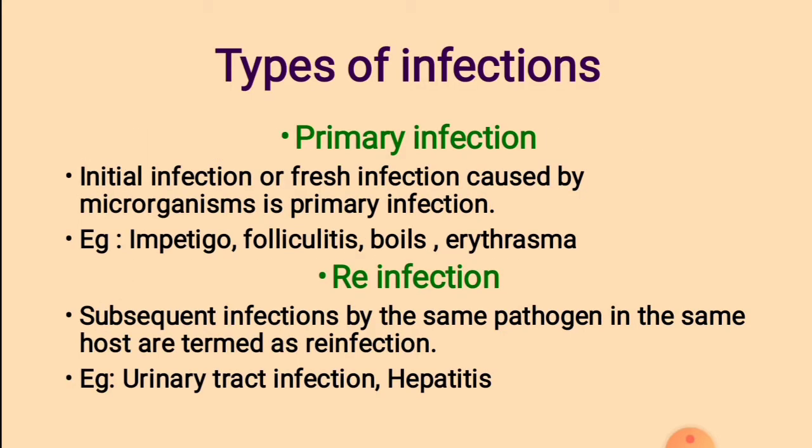What are the different types of infections? 1. Primary infection: It is the initial or fresh infection caused by microorganisms. For example: impetigo, folliculitis, boils, and erythrasma. Impetigo means a highly contagious infection forming sores on the face.